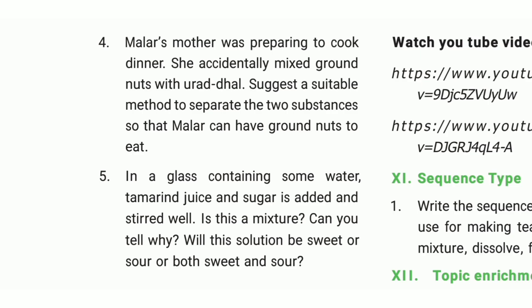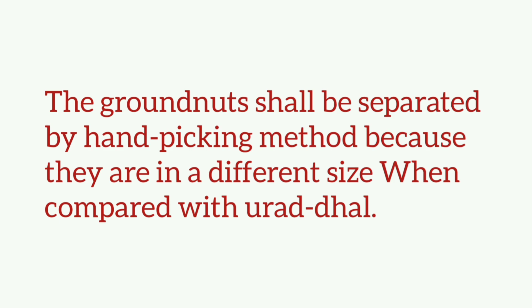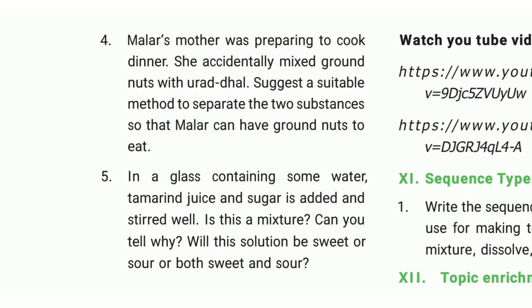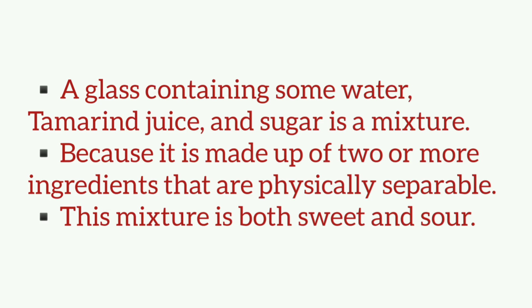Fourth question: groundnut shells can be separated by hand picking method, because they are of different shape when compared with urad dal. Fifth question: a glass containing water, lemon juice, and sugar is a mixture, because it is made up of two or more ingredients that are physically separable. This mixture is both sweet and sour.